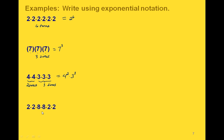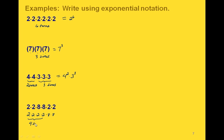In the last problem, we have two twos, then two eights, then two more twos. We use the commutative property of multiplication to regroup all like bases together, which means we can write this as two to the fourth power times eight to the second power.